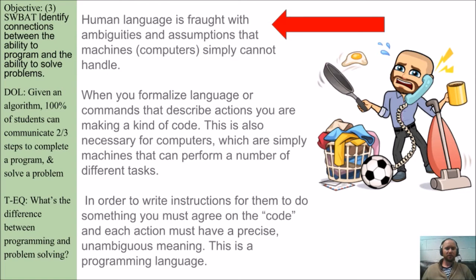Human language is fraught with ambiguities and assumptions that machines simply cannot understand. When you formalize language or commands that describe actions, you are making a kind of code. This is also necessary for computers, which are simply machines that can perform a number of different tasks. In order to write instructions for them to do something, you must agree on the code, and each action must have a precise, unambiguous meaning. This is a programming language.